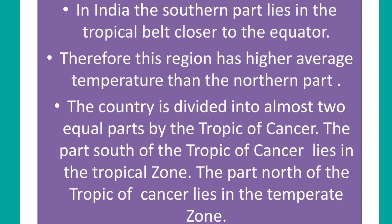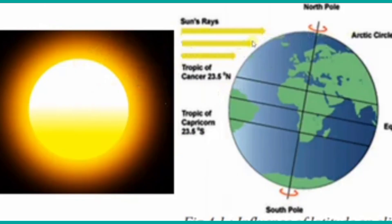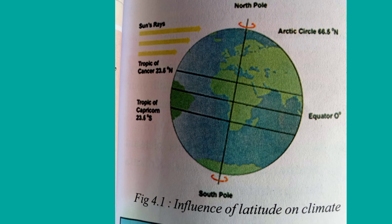Figure 4.1 shows the influence of latitude on climate. The key latitude lines shown include: 0 degrees (equator), 23.5 degrees north (Tropic of Cancer), 66.5 degrees north (Arctic Circle), 90 degrees north (North Pole), 23.5 degrees south (Tropic of Capricorn), and 66.5 degrees south (Antarctic Circle).